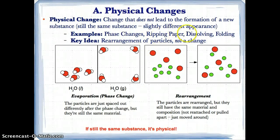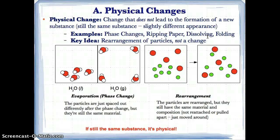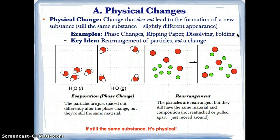Ripping paper is a physical change — if you rip paper, you're not changing the fact that it's paper; it's still paper. Dissolving is another example of physical change: if you dissolve salt in water, it's still salt and water. You're not making it into something new. It's just salt and water mixed together, so dissolving is a physical change because you're just rearranging the particles without changing what they are.